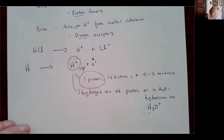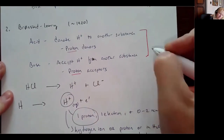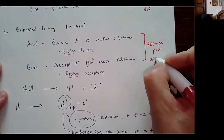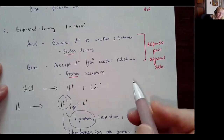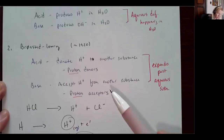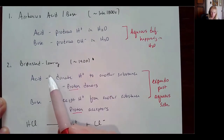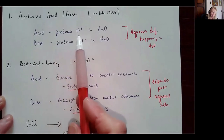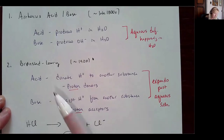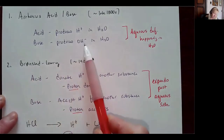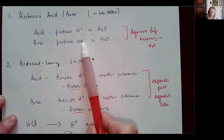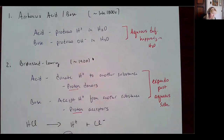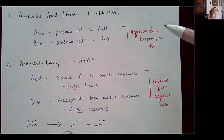The Bronsted-Lowry definition expands beyond aqueous solutions — I no longer need water present to define an acid-base. All Arrhenius acid-bases are also Bronsted-Lowry, because in water if something produces hydrogen ion it's donating that proton, and a base producing hydroxide ion will accept a proton to form water. However, not all Bronsted-Lowry acid-bases will fit the Arrhenius definition, which is specific to water.